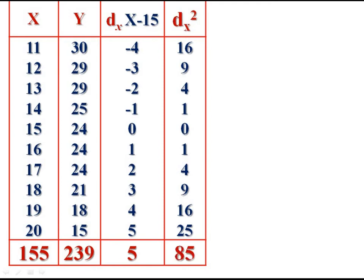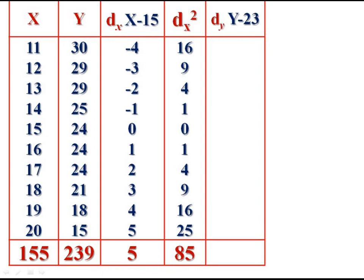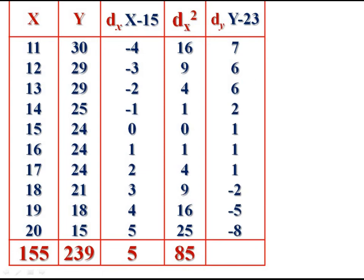Then compute the deviation of y values from assumed mean 23, denoted dy. 30 minus 23 is 7. 29 minus 23 is 6. 29 minus 23 is 6. And so on: 2, 1, 1, 1, 1, minus 2, minus 5, minus 8. Get its summation. Sigma dy equals 9.